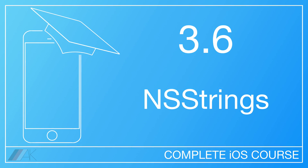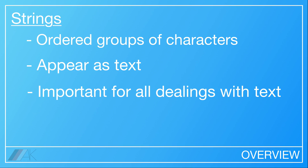Chapter 3, Lesson 6: NS Strings. NS Strings are simply ordered groups of characters, more commonly known as text. This text is like the same as you'd make in a word processing document, except it's unformatted.